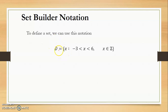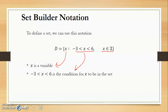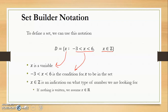So, set builder notation. Here we have set D with the variable X — those are the values we plug in. The values have to meet this condition: the numbers have to be between negative three and six. It also mentions a restriction — the only numbers you can use are integers. X is our variable, 'between negative three and six' is our condition, and integers are the restriction. If nothing is written, we can assume X is an element of the real number system — any number that can be put on our real number line.